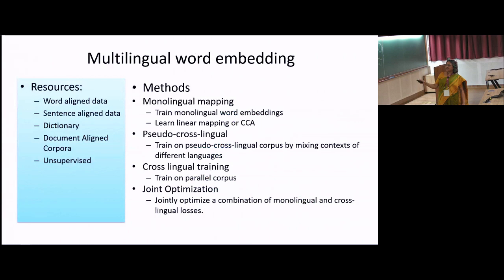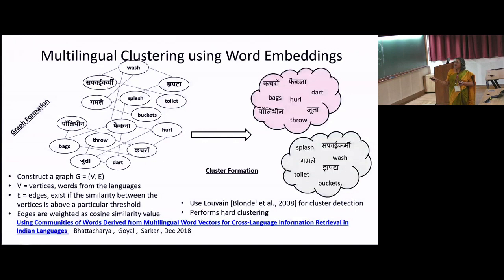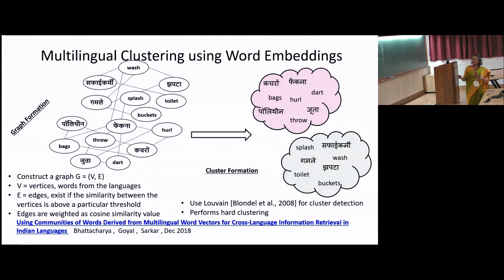There have been methods depending on various resources — availability of a small bilingual dictionary, sentence-aligned parallel data, document-aligned corpora, or comparable corpora such as Wikipedia data. Recently, there has been good work on unsupervised multilingual word embeddings. We did earlier work on cross-lingual information retrieval where we trained word embeddings based on Wikipedia in multiple languages, using small dictionaries, forming clusters among words, and used it for information retrieval.